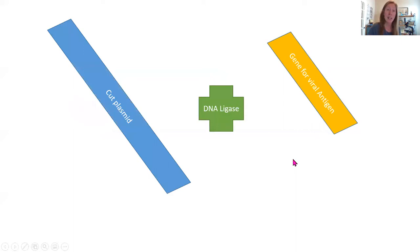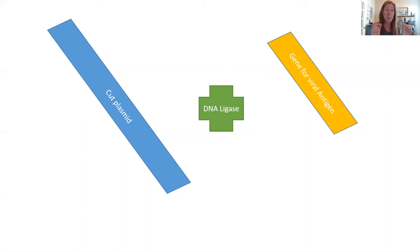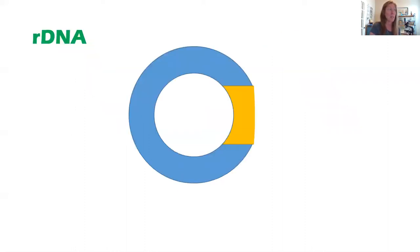Next, we're going to take that cut piece of plasmid and the trimmed gene from the virus and combine them using DNA ligase. DNA ligase is an enzyme that connects the sticky ends of our plasmid to the sticky ends of our viral DNA. When we're done, we'll have our recombinant DNA — the gene we got from the virus is now incorporated, and the plasmid is all back together in one circle.